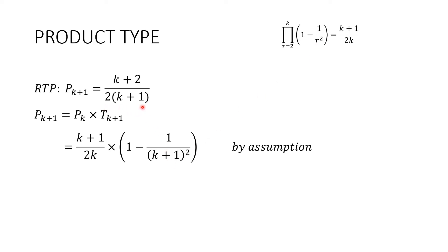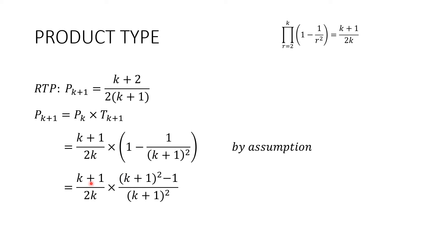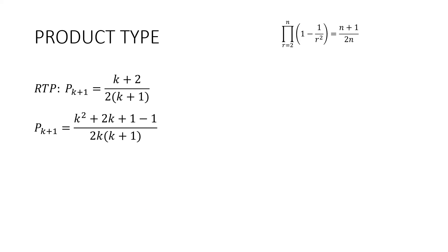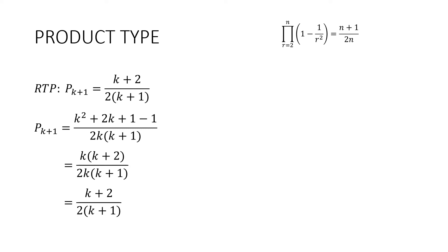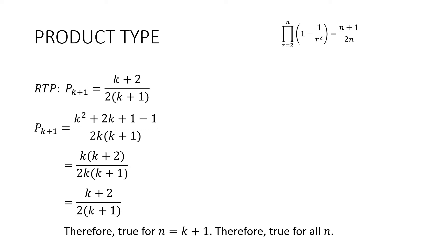Substituting in the assumption and multiplying by the k plus one term, we need this all to be in one single fraction. I can see that k plus one is going to cancel, expanding that out at the same time. Tidying up, I factorize the k out of those two terms because these two cancel, and I can see that this k is also going to cancel, and we're actually finished. Therefore it's true for n equals k plus one, therefore it's true for all n.